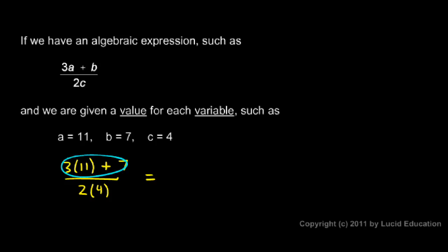Let's compute a value for the numerator and the denominator. And then after that we'll do the dividing. But the numerator first. 3 times 11 is 33. So in the numerator I have 33 plus 7. In the denominator 2 times 4 is 8. So I have 33 plus 7 over 8.